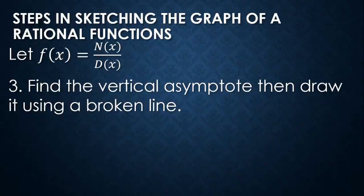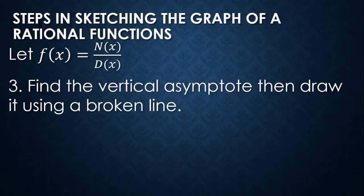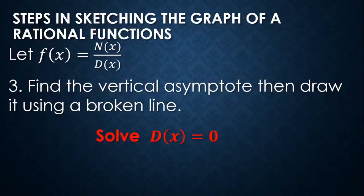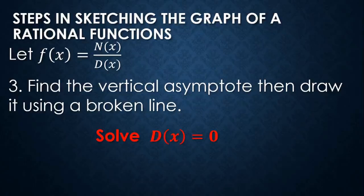Step three: find the vertical asymptote, then draw it using a broken line. To determine the vertical asymptote, we let d(x) = 0 and solve for the value or values of x. That is the restriction on the denominator of the rational function. If the denominator is not in factored form, we factor it first and then equate each factor to zero.